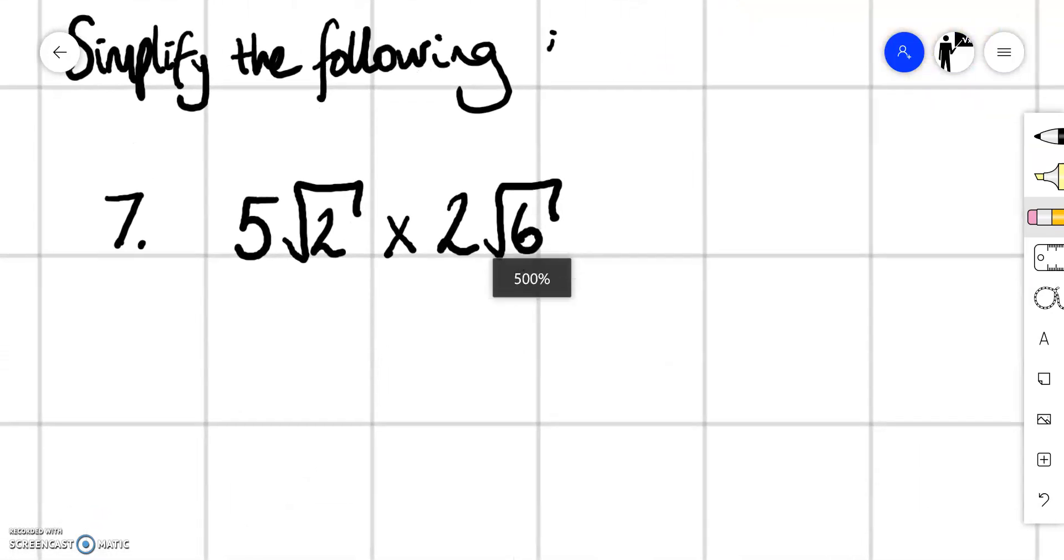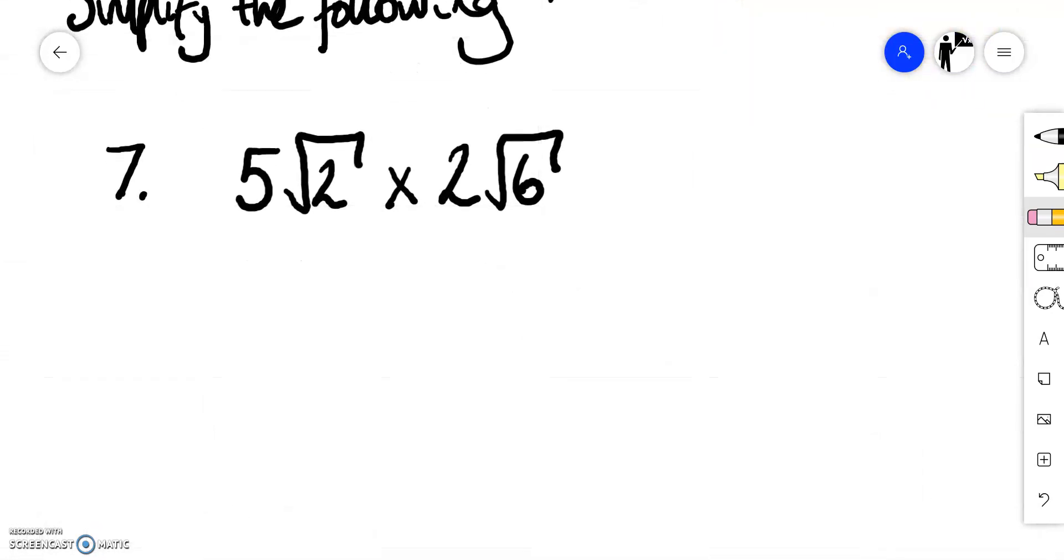Okay so we've got examples 7, 8 and 9. Unlike before we now have numbers in front of our surds. In order to solve problems such as this we just multiply the whole numbers together then resolve the surds.